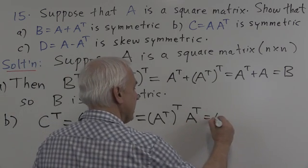This is an important problem because it shows us how to construct symmetric and skew-symmetric matrices. If you want a symmetric matrix, one way is to take a general square matrix and add it to its transpose. If you want a skew-symmetric matrix, take the difference between A and its transpose. And the product A times A transpose also always gives a symmetric matrix.